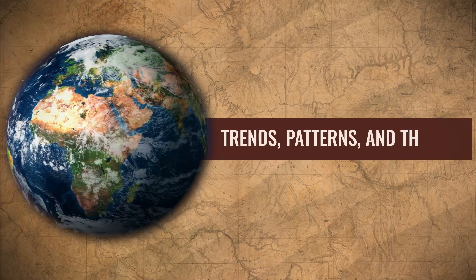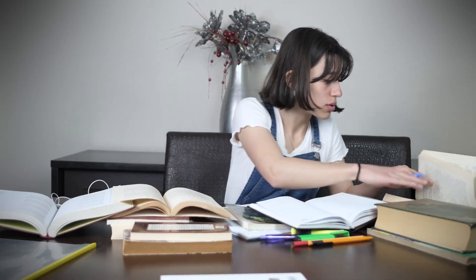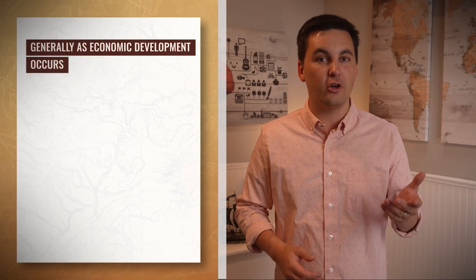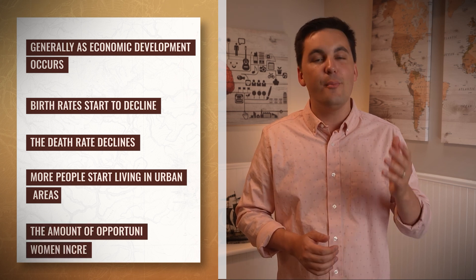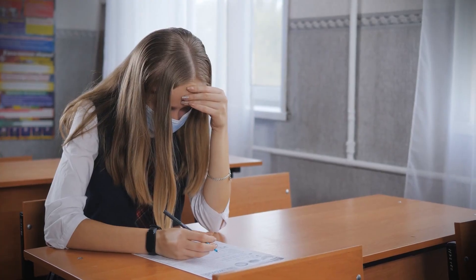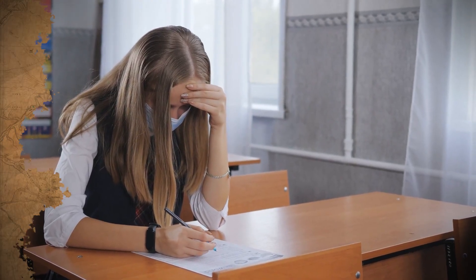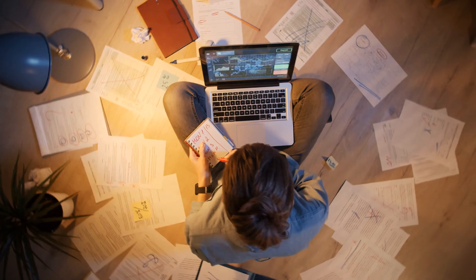My next honorable mention is trends, patterns, and themes — don't forget about them. There are a lot of overlapping patterns and trends in this unit that can help you break down unfamiliar questions. For instance, generally as economic development occurs, birth rates decline, death rates decline, more people live in urban areas, opportunities for women increase, technology use for food production goes up, and population densities shift. Understanding these general patterns will help if you blank on a particular topic. Lastly, don't forget to study Malthus, Neo-Malthusians, and the role of government in population growth — and of course, talk to your teacher and look over your notes.